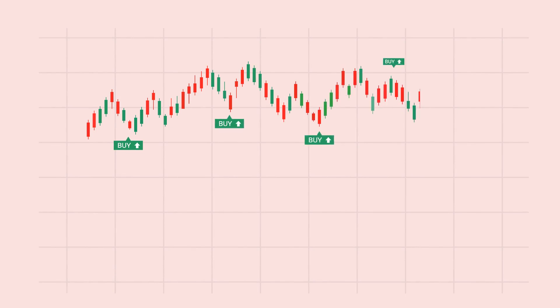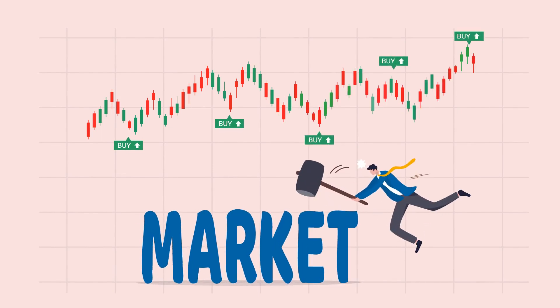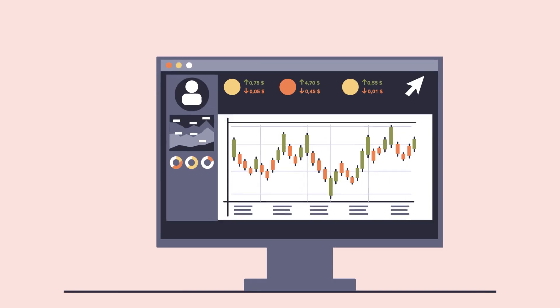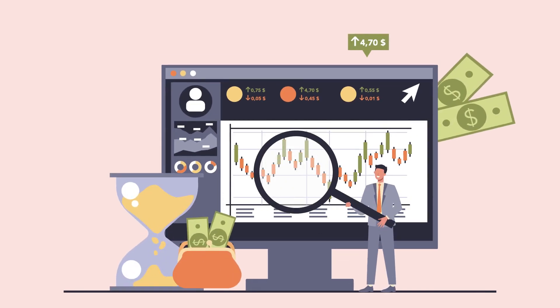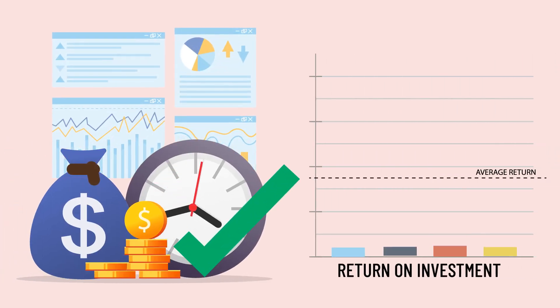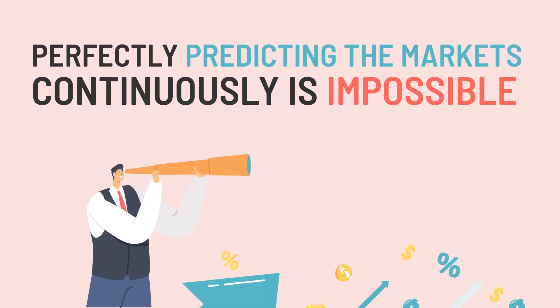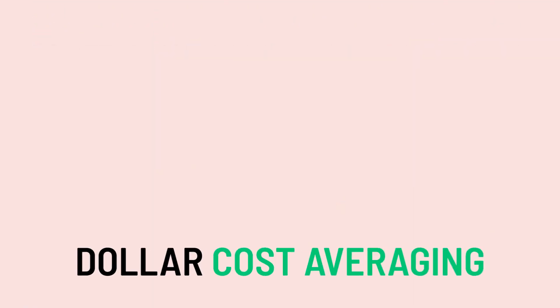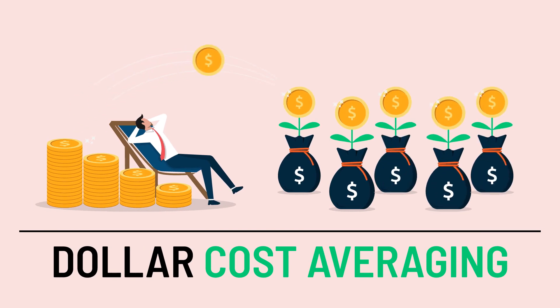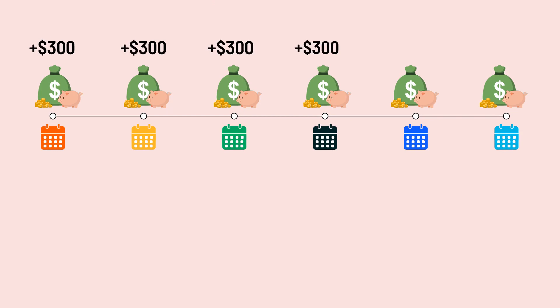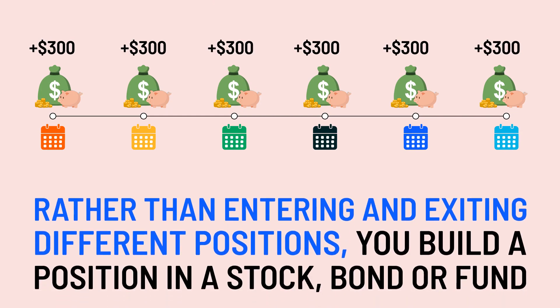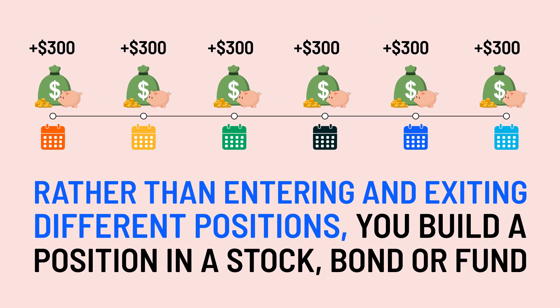The alternative: buy the dip. An opposing strategy to dollar cost averaging is to time the market. Market timing is an investment strategy whereby investors attempt to beat the stock market by predicting its performance — an active strategy that focuses on the short term and requires close attention and monitoring of the market. Some investors choose this approach because if they get their timing right they can generate above-average returns. However, perfectly predicting the markets continuously is impossible. Dollar cost averaging, on the other hand, is a passive investment strategy that does not require as much market attention, and rather than entering and exiting different positions, you build a position in a stock, bond, or fund.